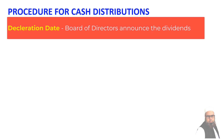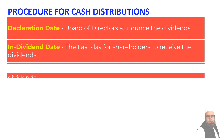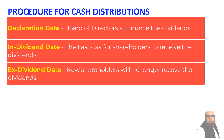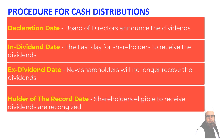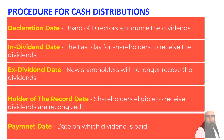The second step involves the in-dividend date — the last date to buy shares in order to receive the dividend. The ex-dividend date is the date on or after which a buyer of the stock will not be entitled to receive the declared dividend. The holder of record date is the date on which the company determines the shareholders who are entitled to receive the dividends, based on the share ownership record. After this date, the company calculates the entitlement for each eligible shareholder based on the number of shares held and prepares the dividend register.